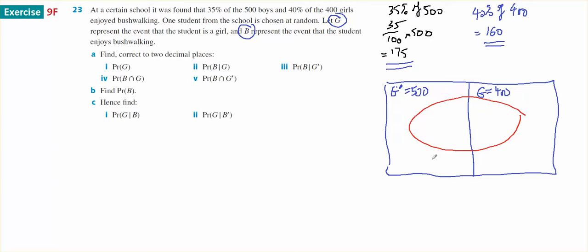And I know that of the 400 girls, 160 of them like bushwalking, and 175 boys like bushwalking. That gives me 325 boys not liking bushwalking and 240 girls not liking bushwalking.